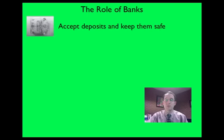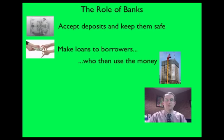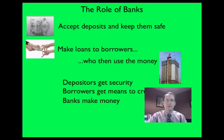Let's talk about the role of banks. What do banks do? Banks accept deposits and keep them safe — that's the primary role of a bank. They also make loans to borrowers. What do those borrowers do? They turn around and use the money to build things, to buy things, to make investments. Depositors get security for their money, borrowers get the means to create things and grow the economy, and banks make money in those transactions.